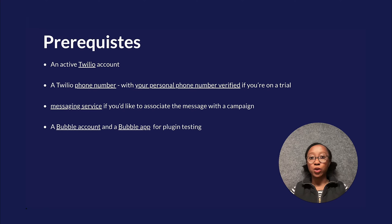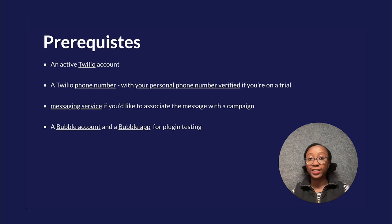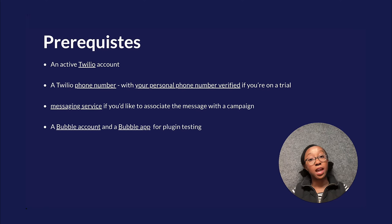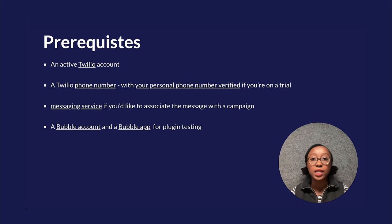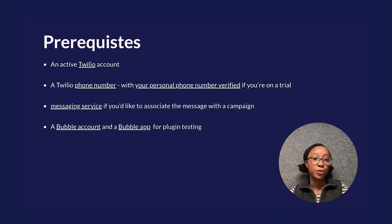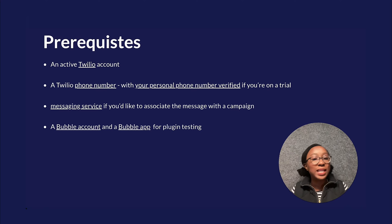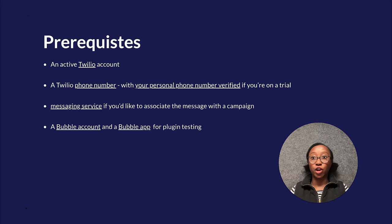There are also a few prerequisites. In the show notes there's a link to the full tutorial which also has direct links to where you can get set up. You'll need a Twilio account and also a Twilio phone number, which you can register for — I think for trial accounts you get those for free. Messaging service is optional so you don't really have to worry about that. You'll also need a Bubble account and a Bubble app — it can be the most basic, just bare bones. For the demo piece we'll build a workflow together just to show you how it works in practice.